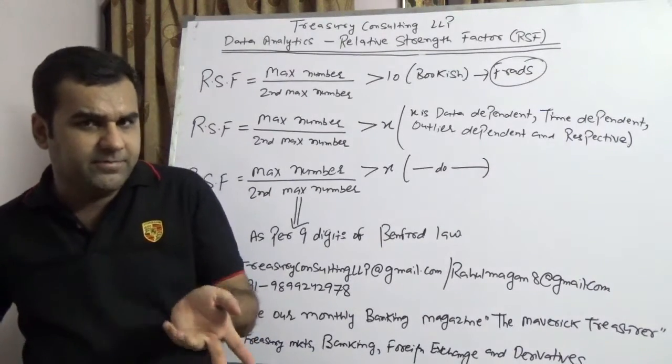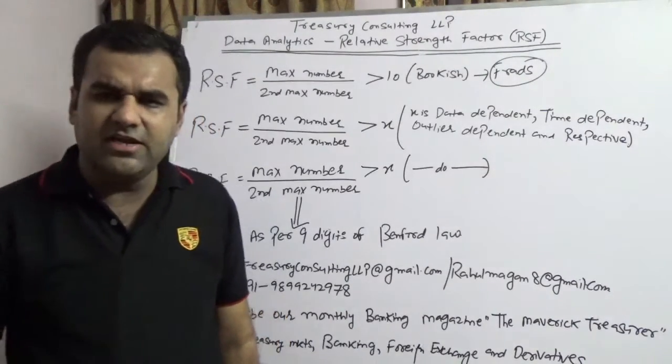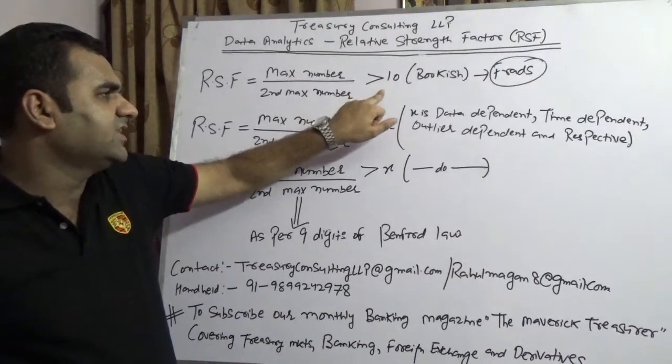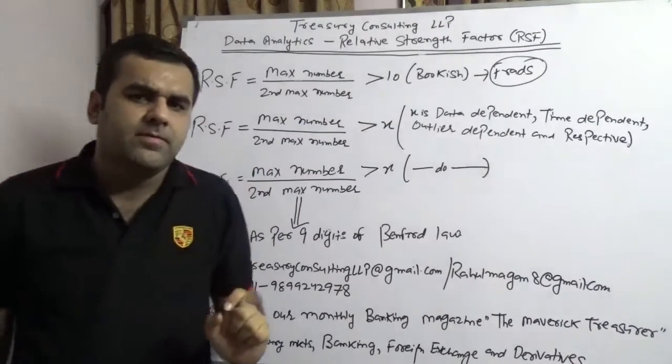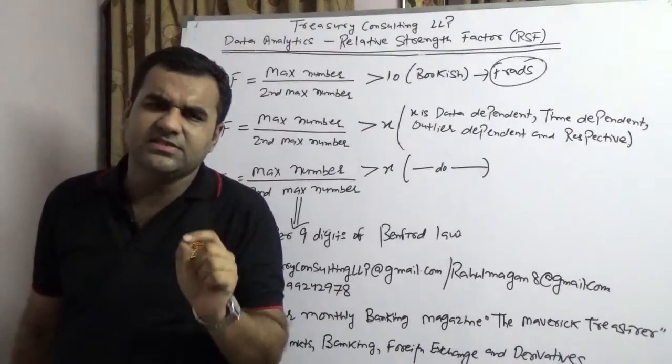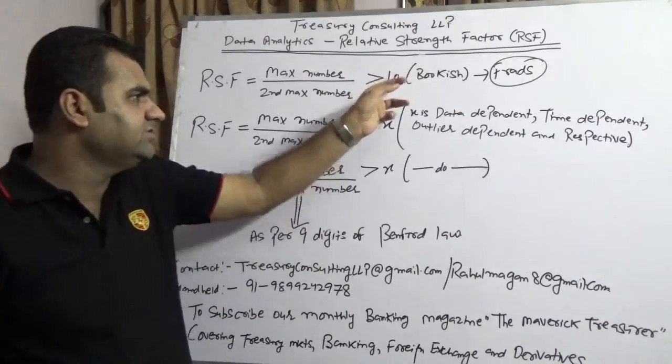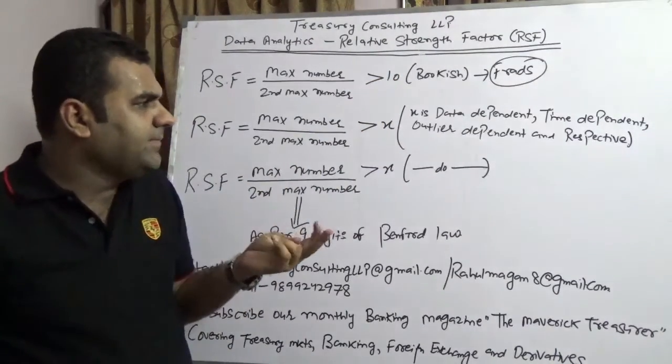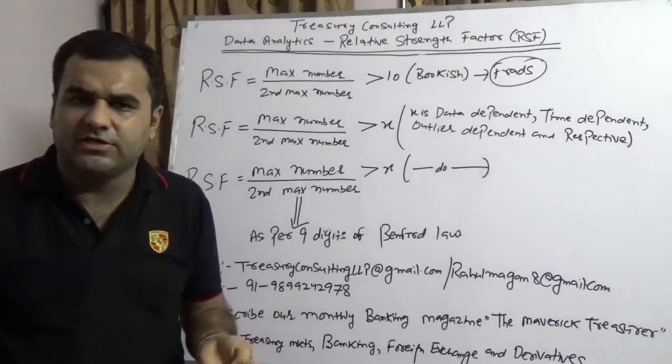That is why Treasury Consulting LLP strongly believes that maximum number divided by second maximum number greater than 10 is not right. The reason is that X, that 10 which we refer to as X here, is data-dependent, is time-dependent, and it's outlier-dependent. So we are never going to take 10.